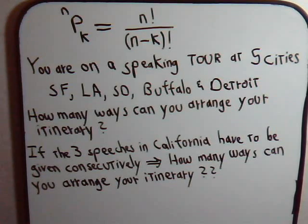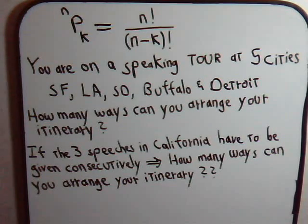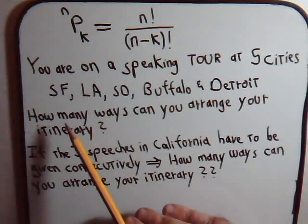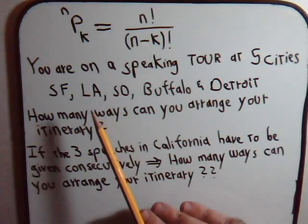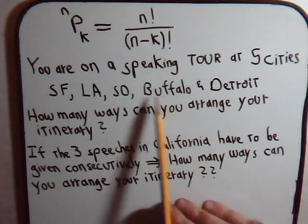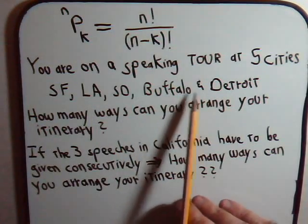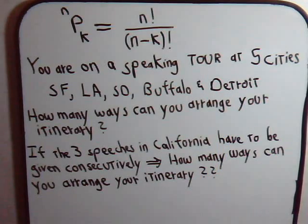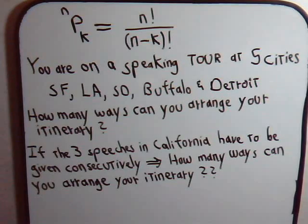Let's consider this permutation problem. Suppose that you are on a speaking tour in five different cities: San Francisco, Los Angeles, San Diego, Buffalo, and Detroit. How many different ways can you arrange the itinerary? Obviously, the order matters here.